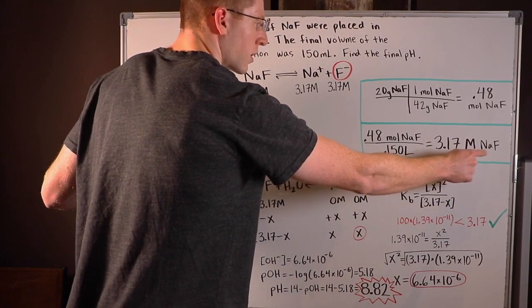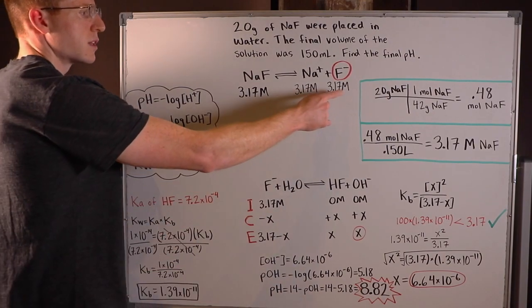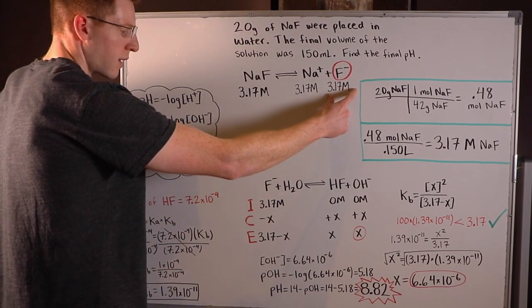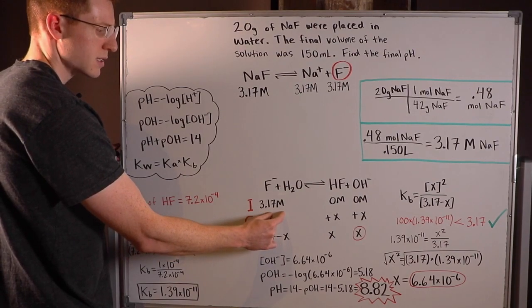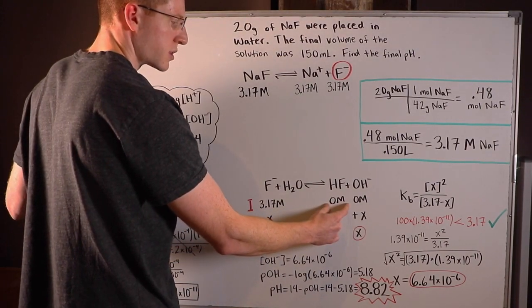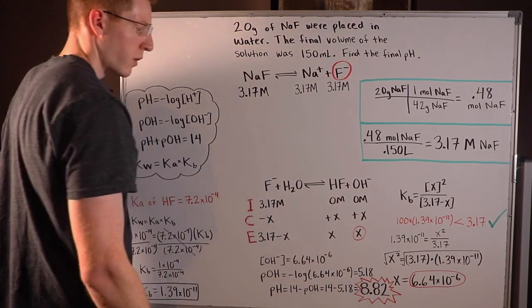So 3.17 molar NAF meant that we had 3.17 molar F-. So that was my initial amount here for the F- and of course I'm going to assume I started out with no HF or OH-.